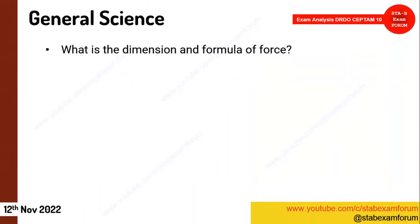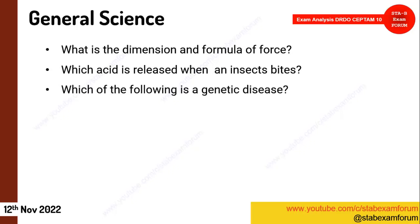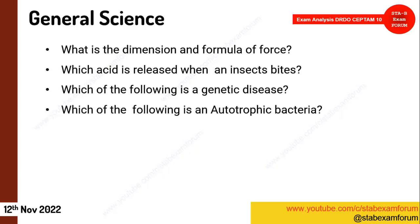A question on the dimensional formula of force was asked — F = ma, so the unit is kg·m/s². Which acid is released in an insect bite? It's formic acid. Some question on genetic disease — colour blindness is a genetic disease. A question on autotrophic bacteria appeared, where you had to choose which option is autotrophic, meaning which organism sustains by itself.